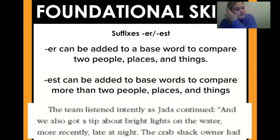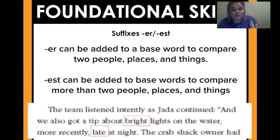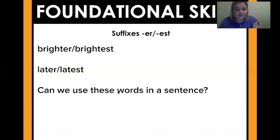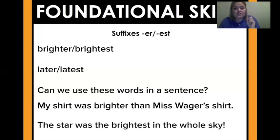So let's look into what this means. The team listened intently as Jada continued: 'We also got a tip about bright lights on the water, more recently, late at night.' I noticed two words in here that we could add ER or EST to — bright and late. Bright could be changed to brighter or brightest. For example: 'My shirt was brighter than Miss Wager's shirt' — you're only comparing two things. But 'the star was the brightest in the whole sky' — you're comparing that star to every star in the sky, so that's more than two things.